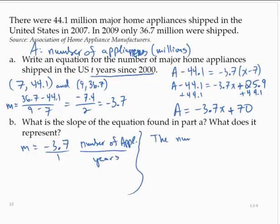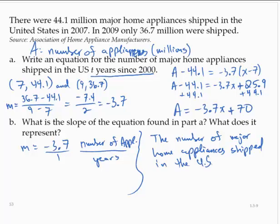The number of major home appliances shipped in the United States is decreasing by 3.7 million appliances per year.